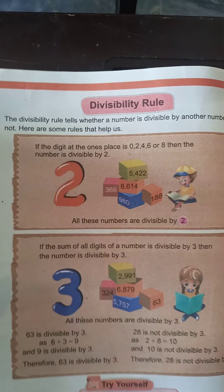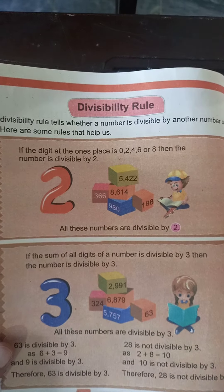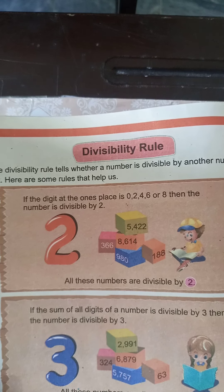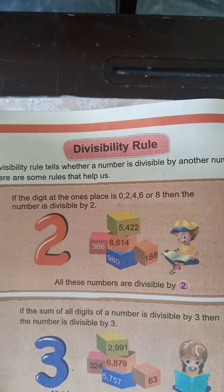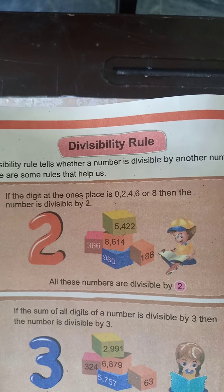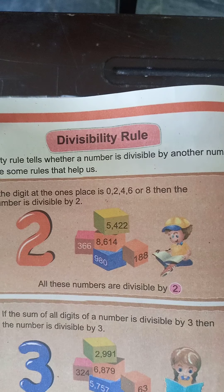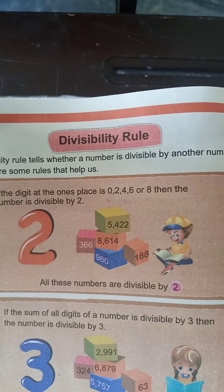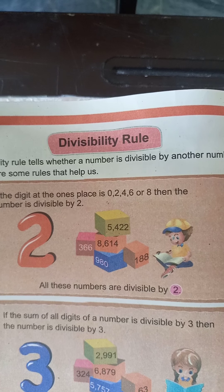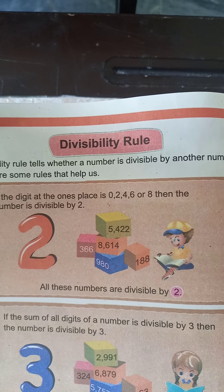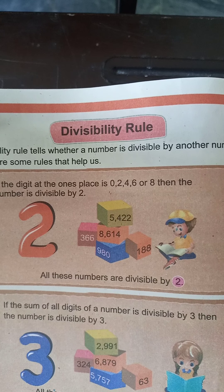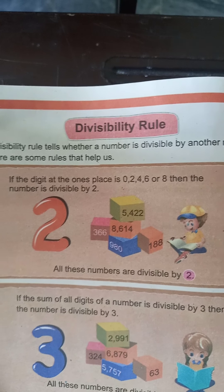Jo first divisibility rule hai, wo kya hai? Divisibility rule number two. The definition of divisibility rule number two is: if the digit at the one's place is zero, two, four, six, or eight, then the number is divisible by two.